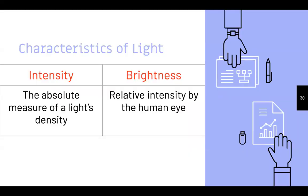Some characteristics of light: there are two common ones — intensity and brightness. Brightness is the relative intensity as perceived by the human eye, meaning how much light is being produced. Intensity is the absolute measure of light density. You've probably used the word brightness before without realizing its scientific context.